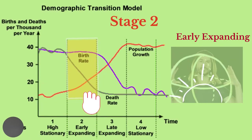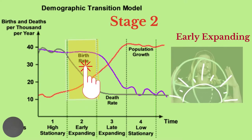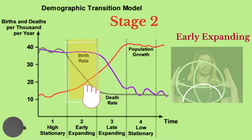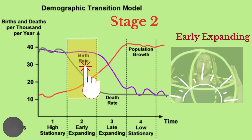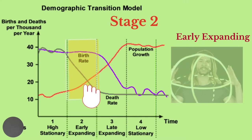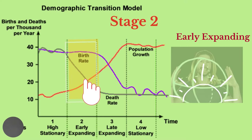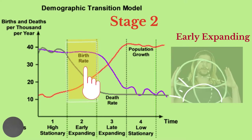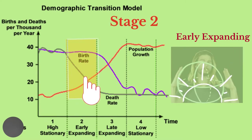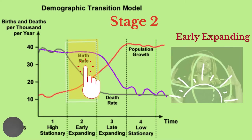At stage two, birth rates remain high but death rates decline sharply, usually resulting in rapid population growth. This results from an improvement in sanitation, disease control due to better health care, and improvement in transportation, which makes food more readily available.